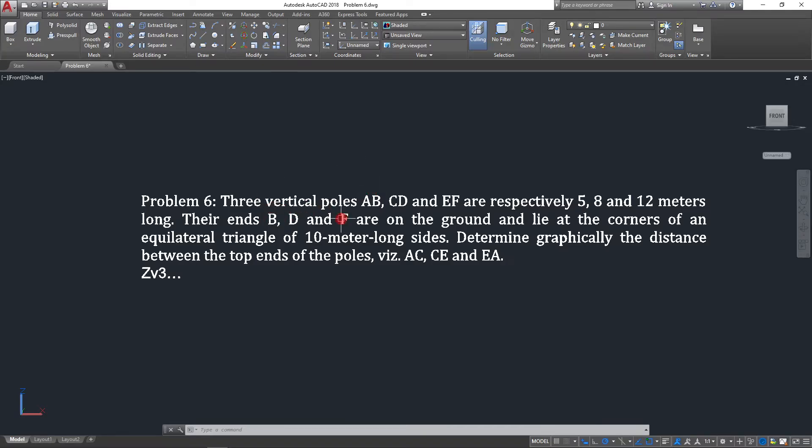So a pole has a top end and a bottom end. Top end is A, bottom end is B. So B, D, and F are the bottom ends of the three poles. They are on the ground, and the poles have been arranged in such a manner that their bottom corners make an equilateral triangle. That equilateral triangle is having a side length of 10 meters.